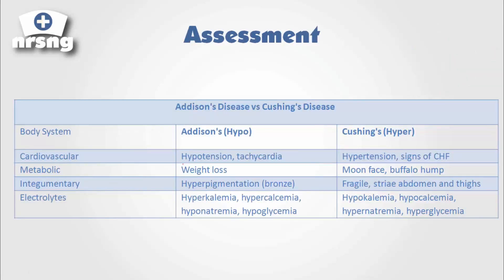I made this little chart here, and I want you to print it out and understand what's going on. We have Addison's disease versus Cushing's disease. With Addison's, we're talking hypo. With Cushing's disease, we're talking hyper. But for now, let's focus on Addison's disease.